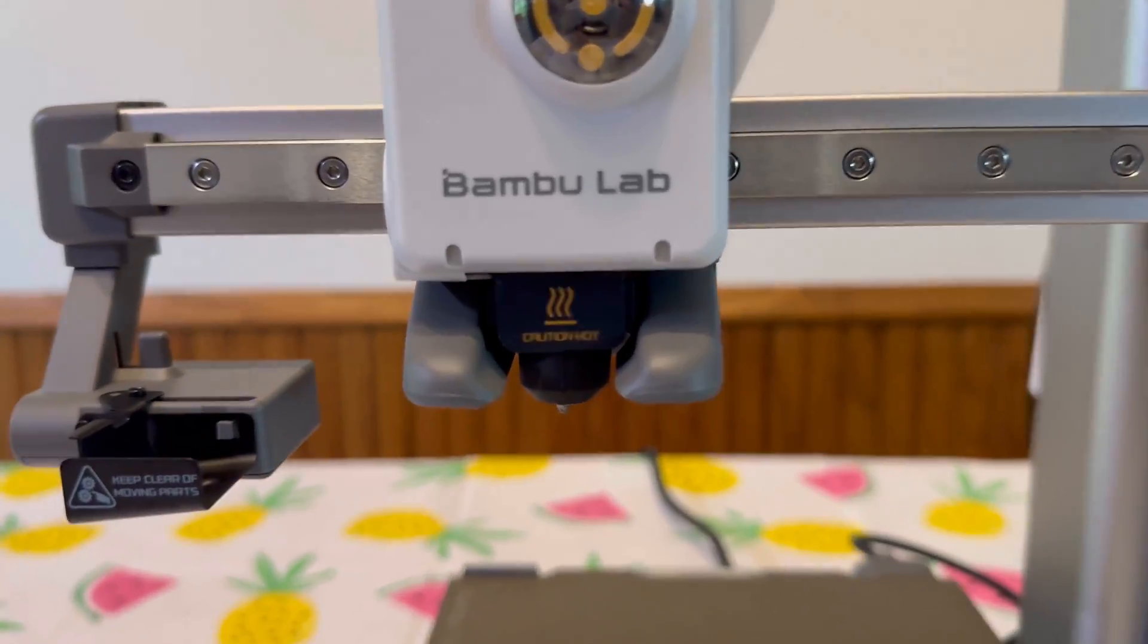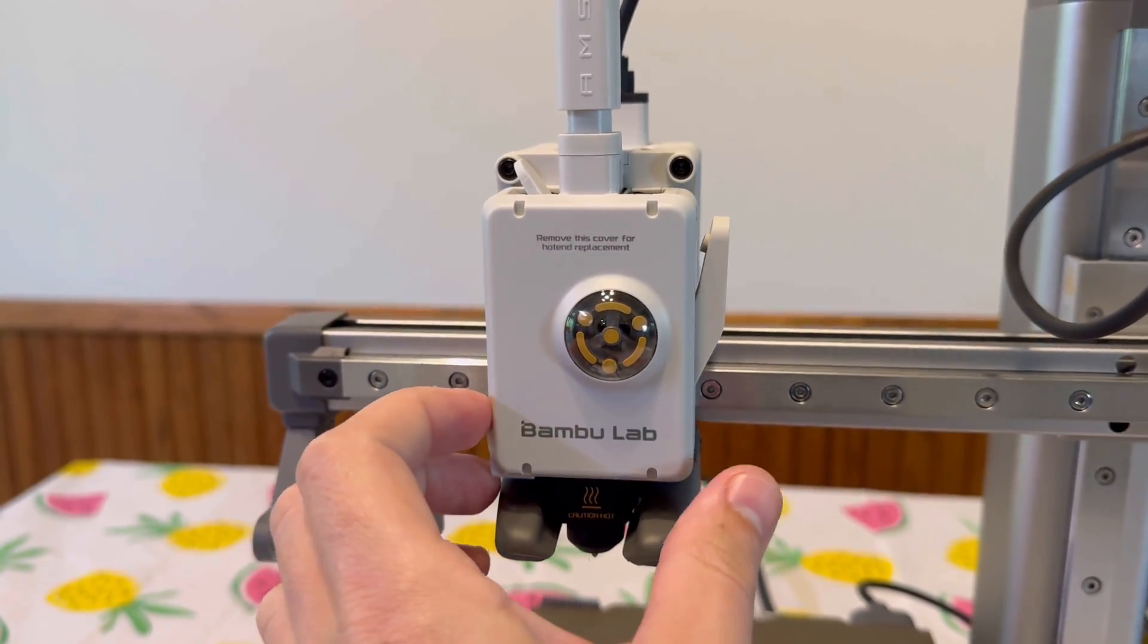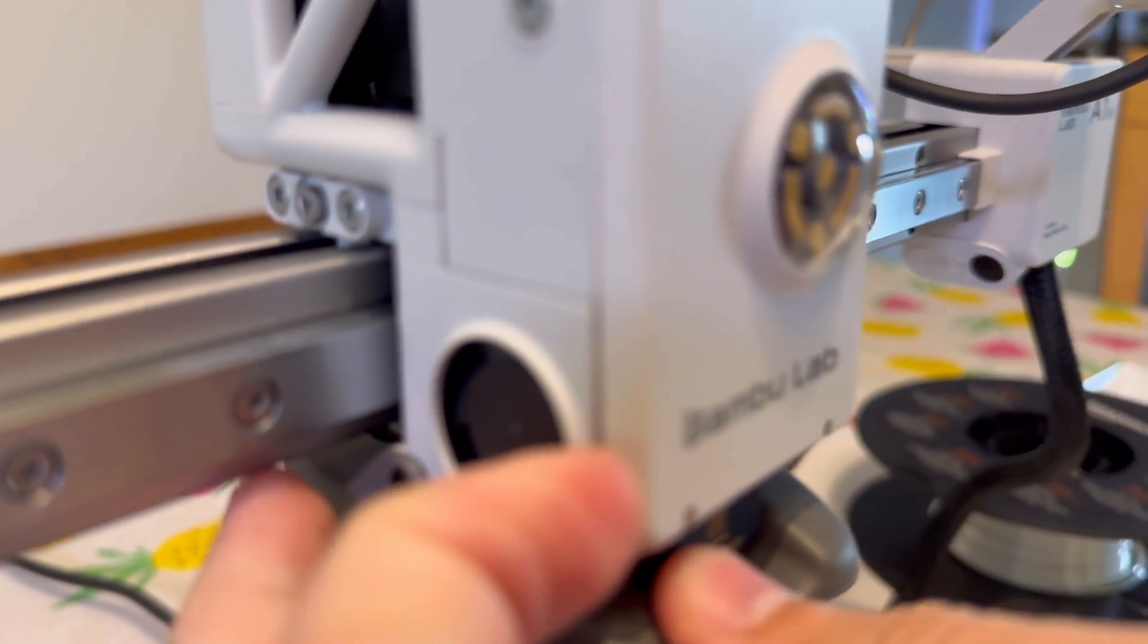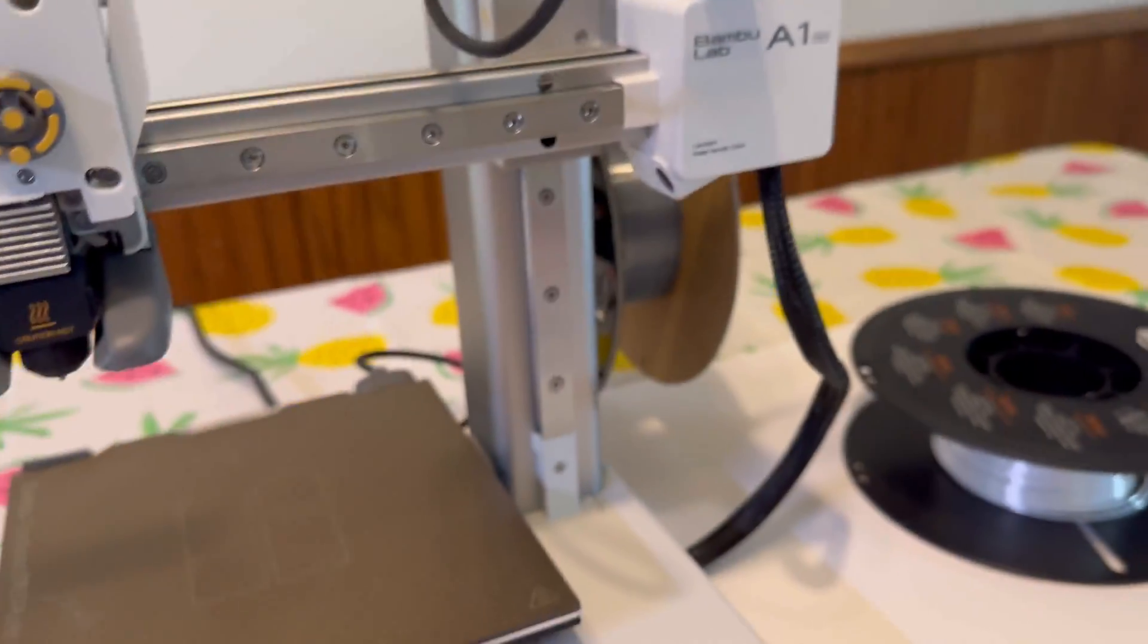All right, so the next step, we want to go back to the nozzle. So first, take this cover off. All you have to do is put your fingernail in the crease over here, see right there, and just peel it off. It should just fall off.